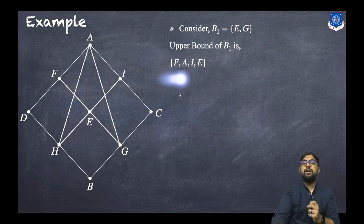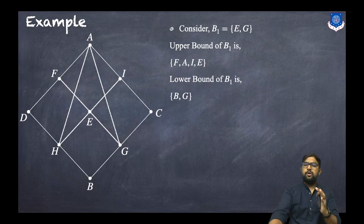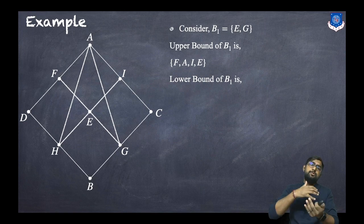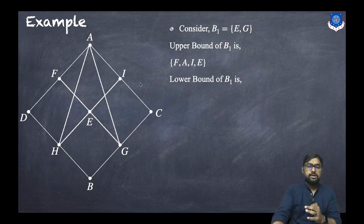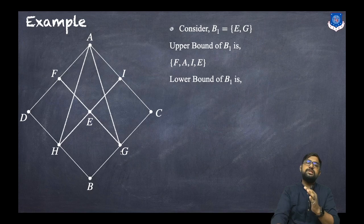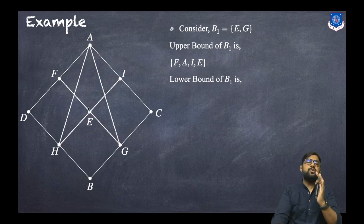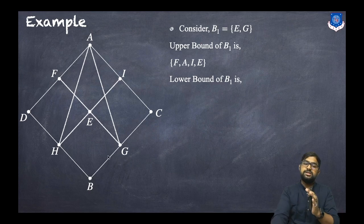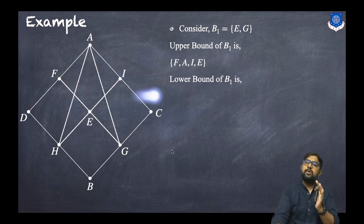For lower bounds of {E, G}, there must be a relation from lower points to the given set. The lower points are H and B. Can we go from H to E? Yes. From H to G? No — so H cannot be a lower bound. Can we go from B to E? Yes. From B to G? Yes. So B is a lower bound. Among set elements, G is a lower bound. Therefore, the lower bounds are B and G.